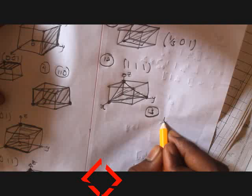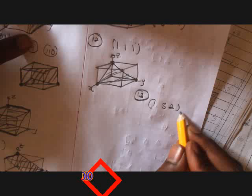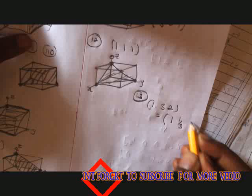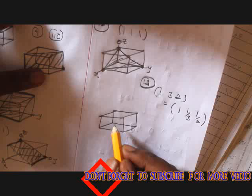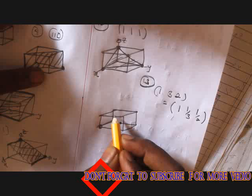Number thirteen has Miller indices (132). Applying the reciprocal procedure gives: 1 for x, 1 over 3 for y, and 1 over 2 for z. So x intercepts at 1, y intercepts at one-third, and z intercepts at one-half. The Miller plane direction will be here.